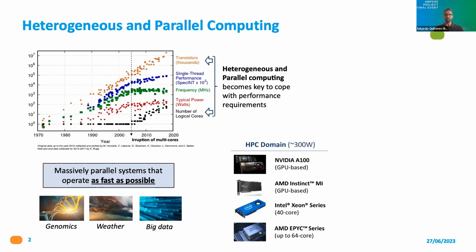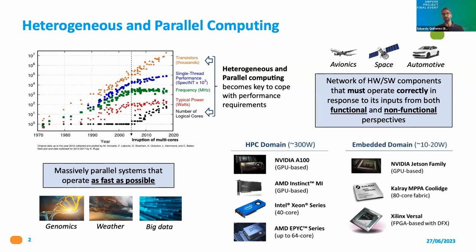In the HPC domain, for many years there have been methods that really allow exploiting all this available power by developing massively parallel systems that can run as fast as possible in many different domains like weather, economics, and big data. In the embedded domain, this trend has occurred in the same way, with certain delay, and there are also a number of processor architectures that are GPU-based, FPGA-based, or many-core architectures that provide a high level of performance.